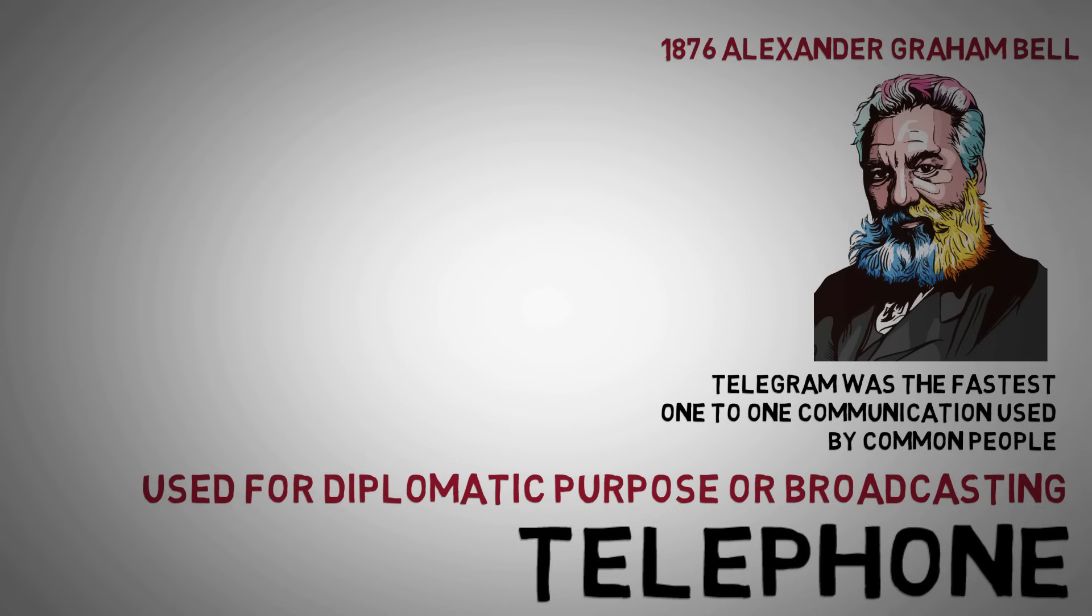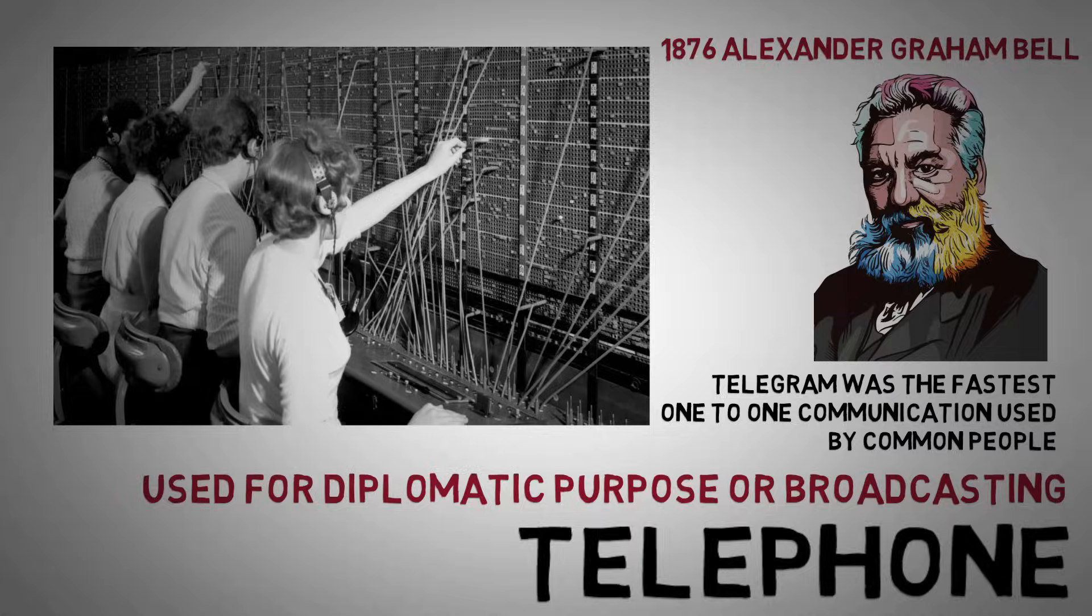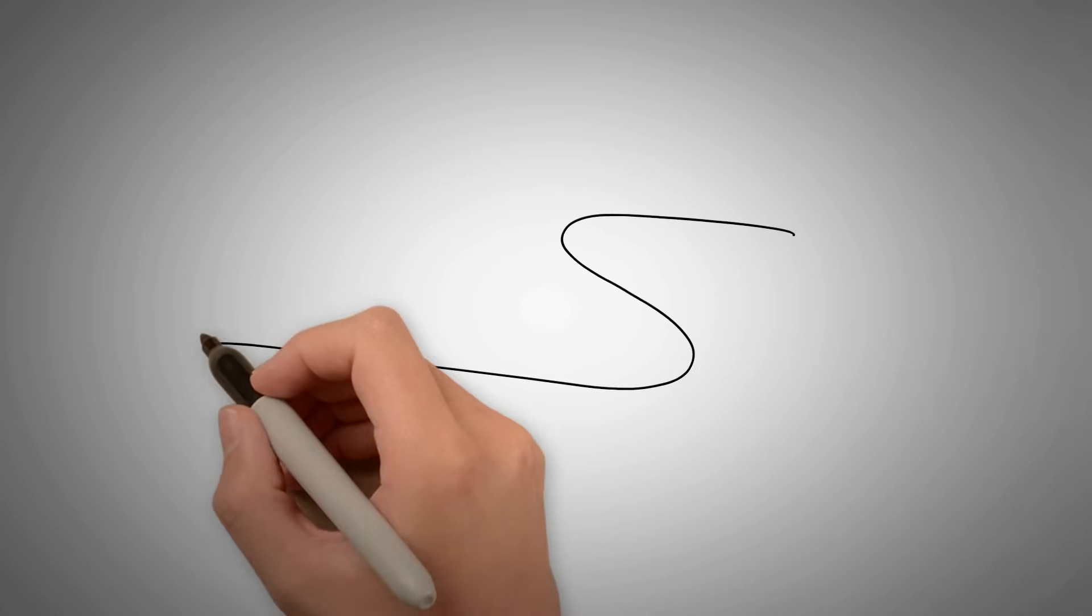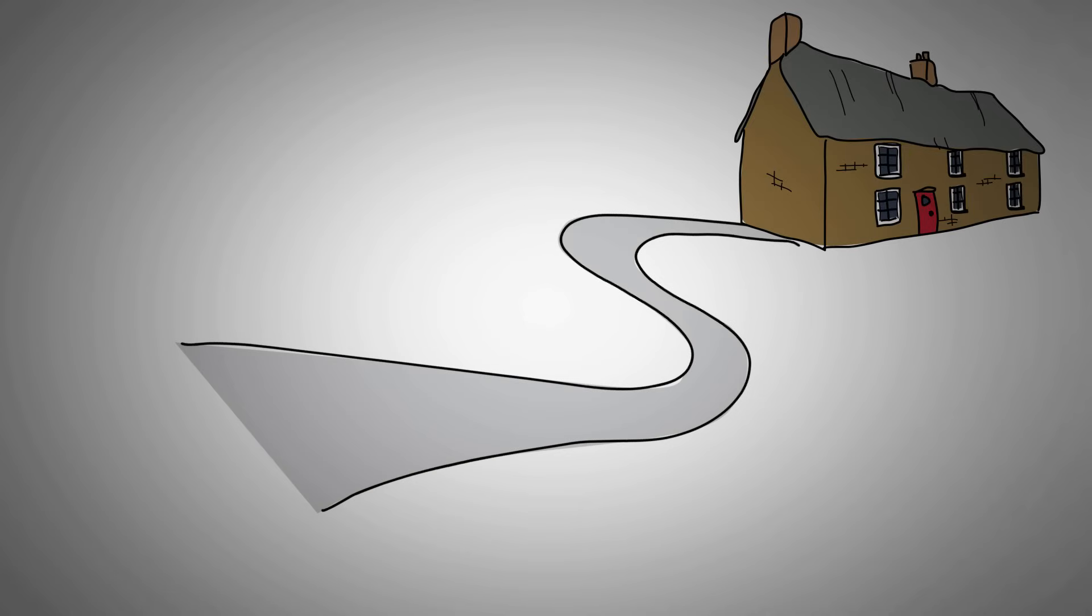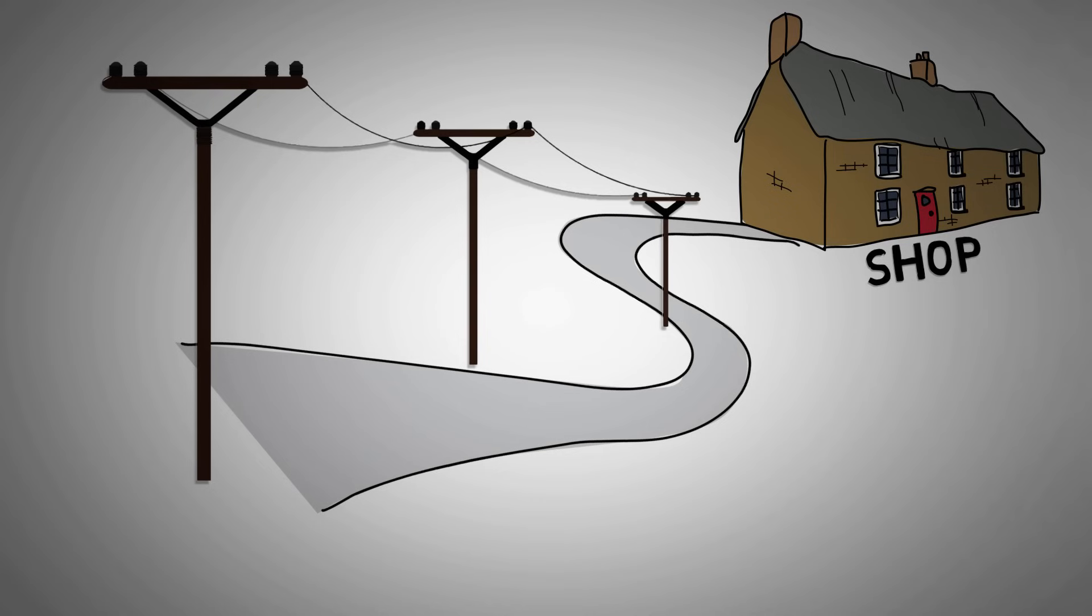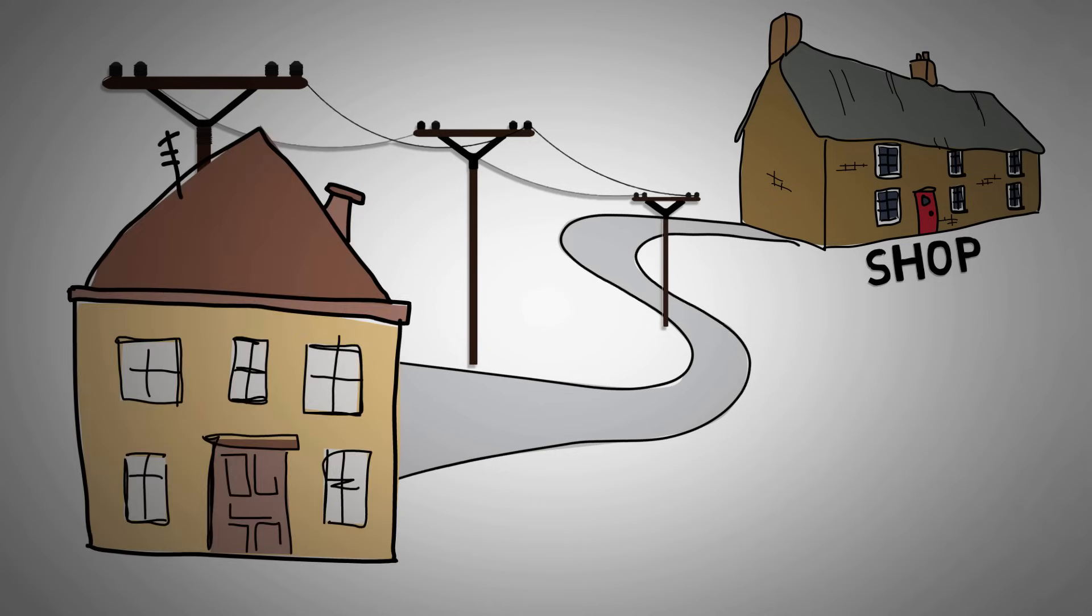At first, the benefits of a telephone exchange were not exploited. Instead telephones were leased in pairs to a subscriber, who had to arrange for a telegraph contractor to construct a line between them, for example between a home and a shop. It was a luxury that only rich people could afford.